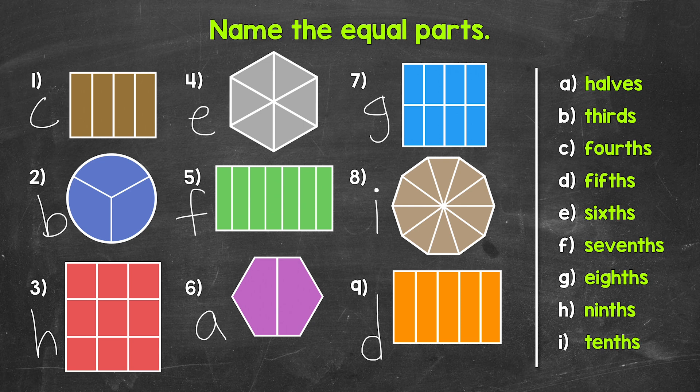For number 6, A — halves. For number 7, G — eighths. For number 8, I — tenths. And lastly, number 9, D — fifths. So there you have it.